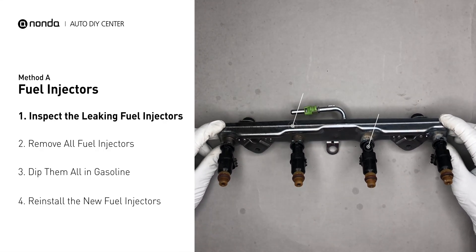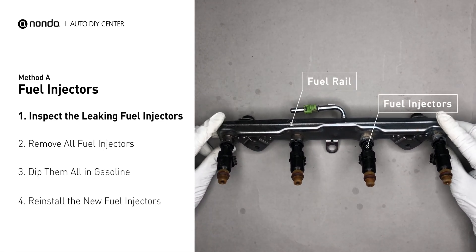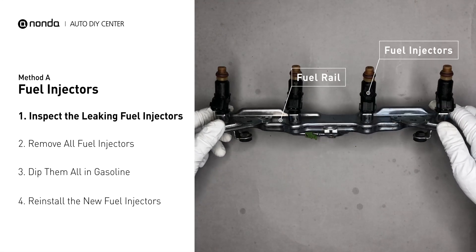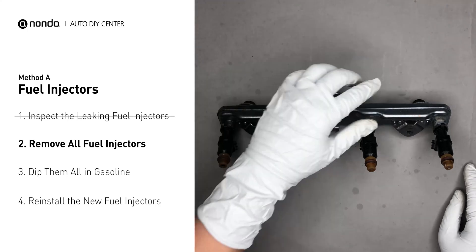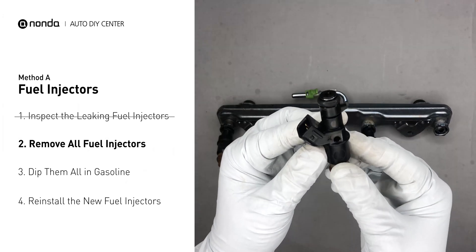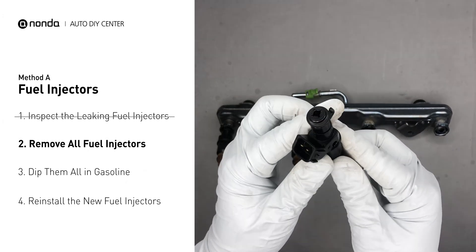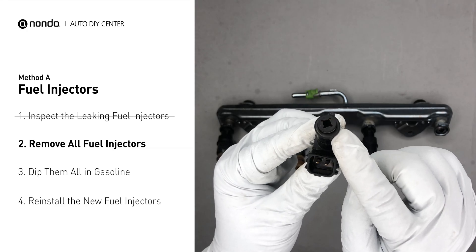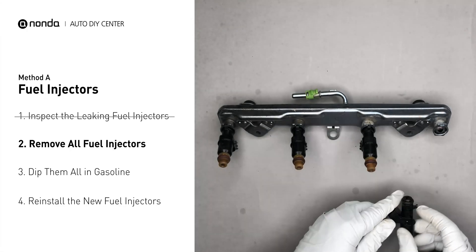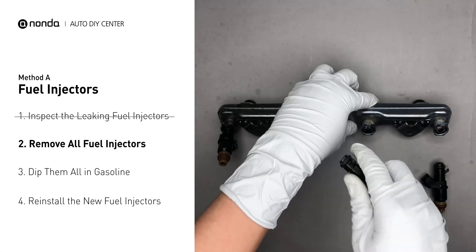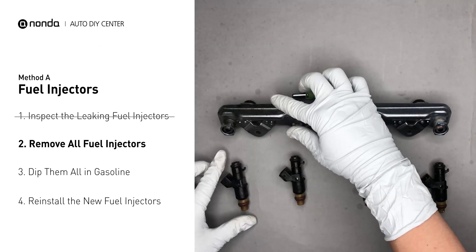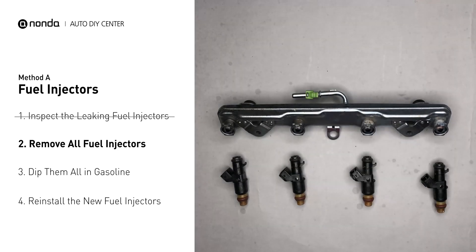Inspect the leaking fuel injectors on the fuel rail. Carefully remove the fuel injector. Make sure the new injector has new seals, and never use the old seals over. When you change the fuel injectors, change them all as a set, otherwise the engine will run unevenly.